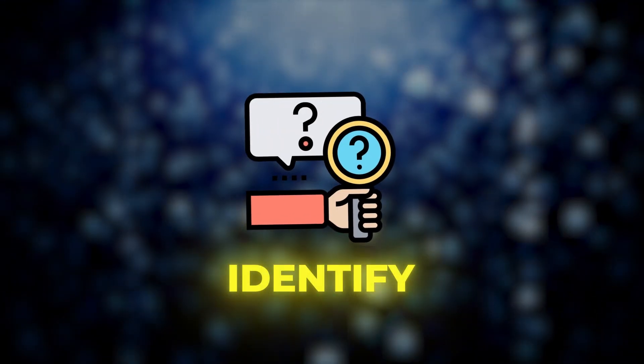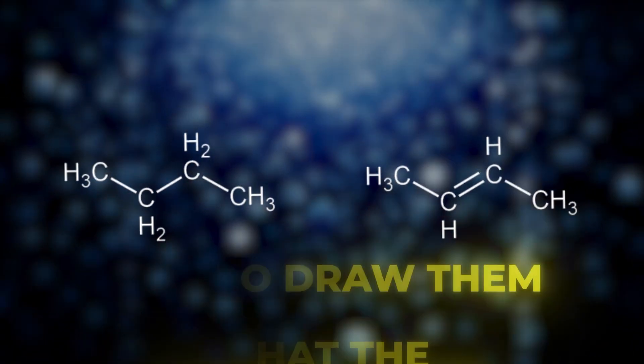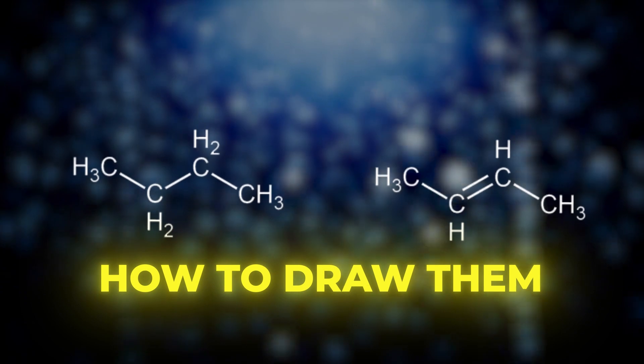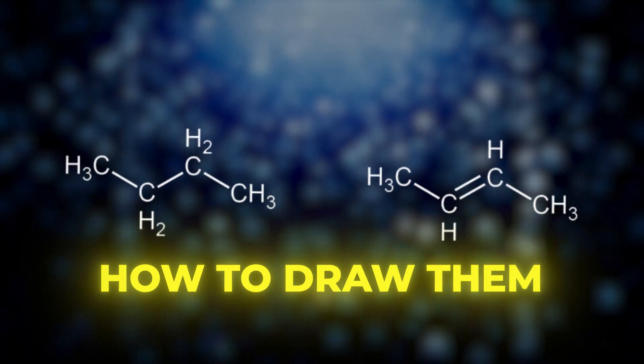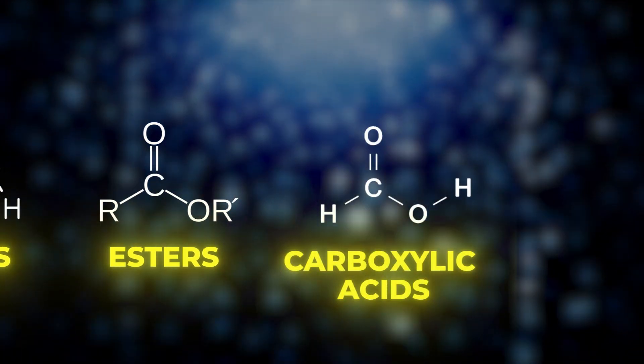As well as this, make sure that you're able to identify and also work out what alkane or alkene you're working with and what the difference is, their chemical formulas and also how to draw them is very important. And in terms of drawing them, make sure that you're also able to draw alcohols, esters and carboxylic acids.